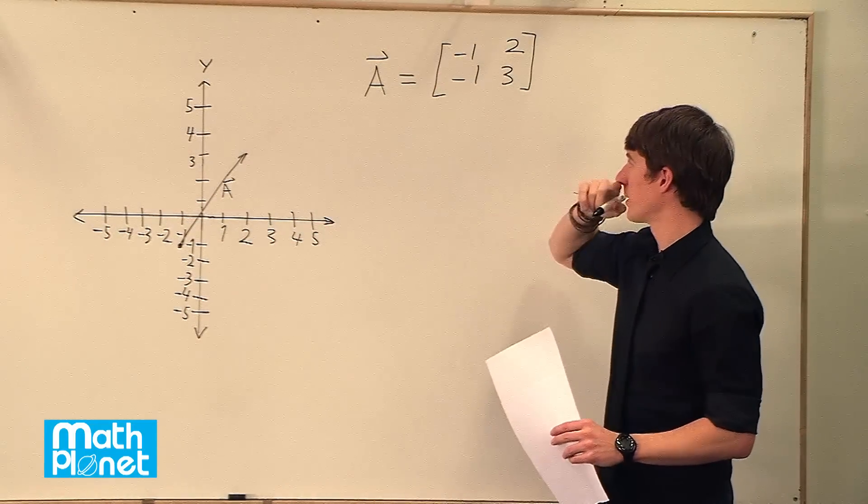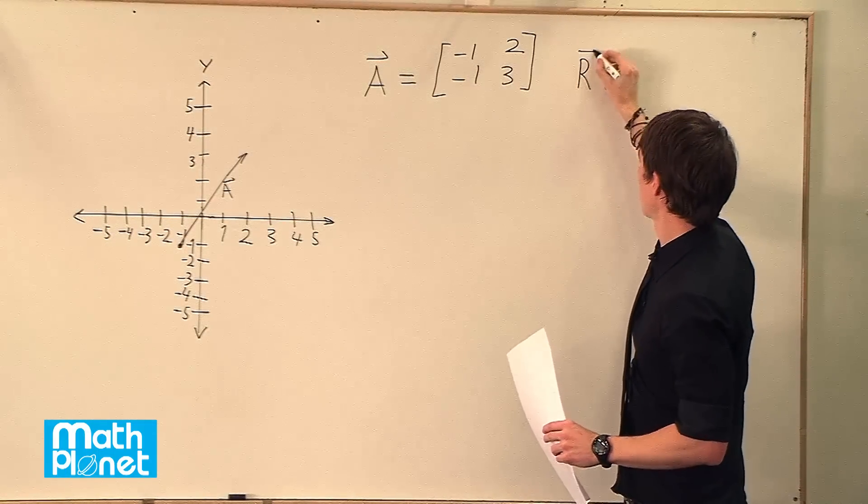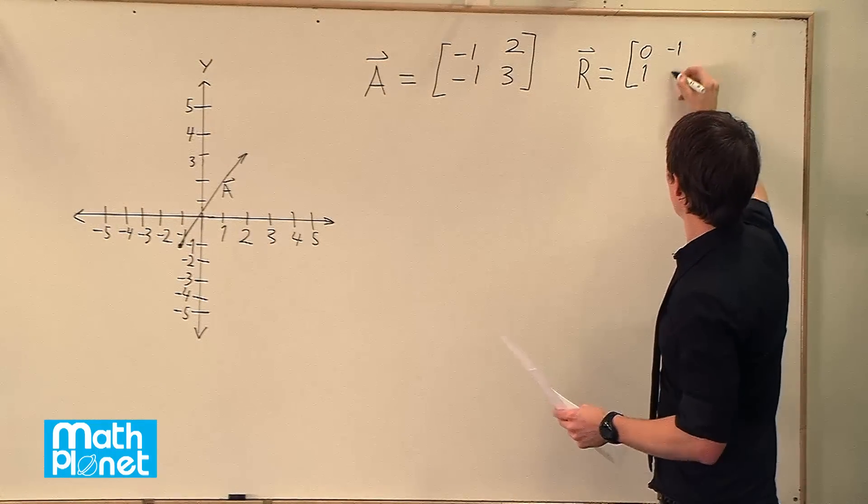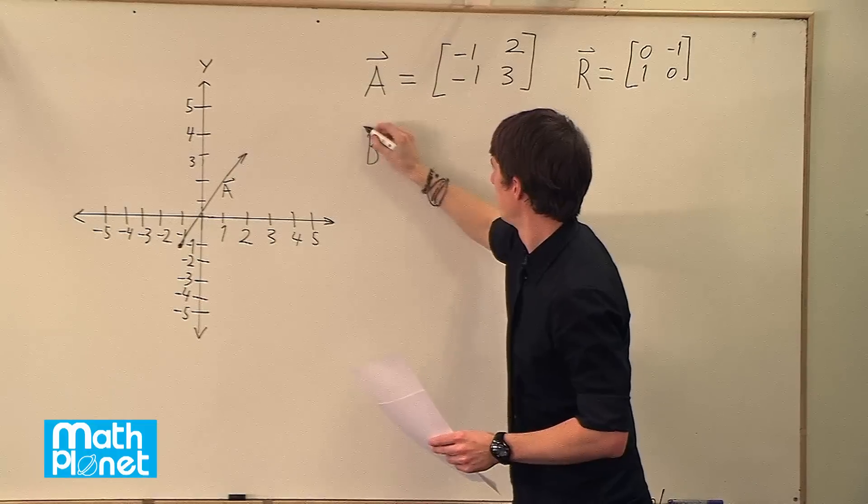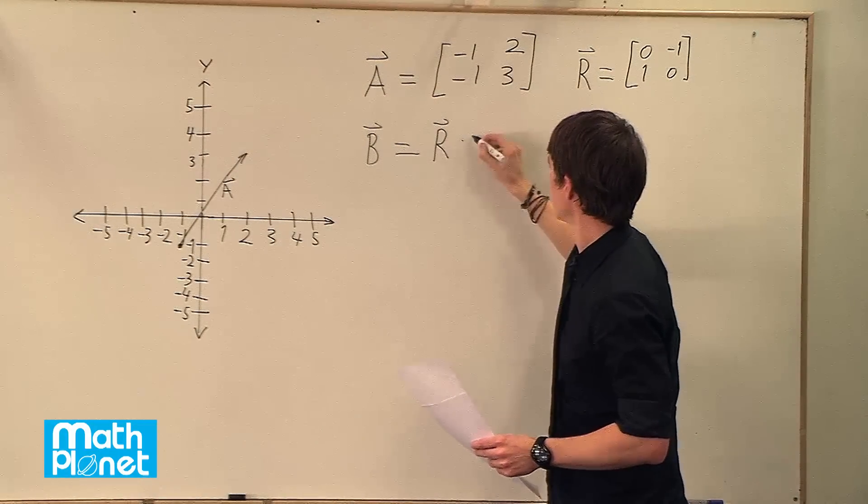So to find B that's rotated 90 degrees, we need to multiply it by the rotation matrix R, and R is just 0, 1, negative 1, 0. So B is defined to be R times A.